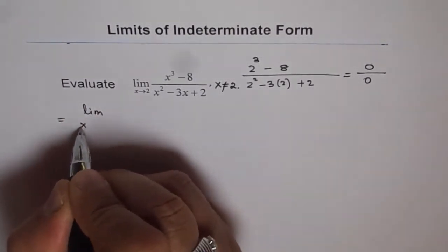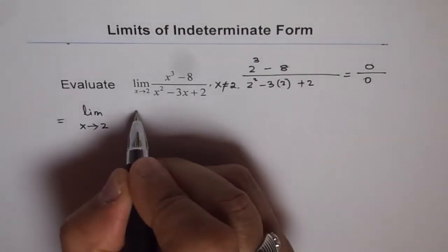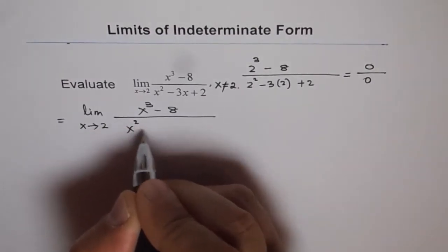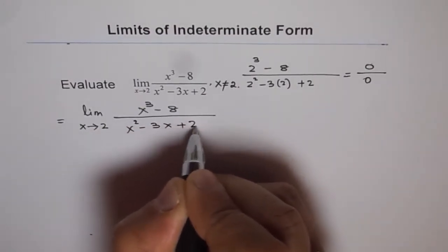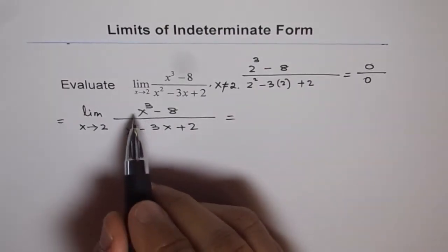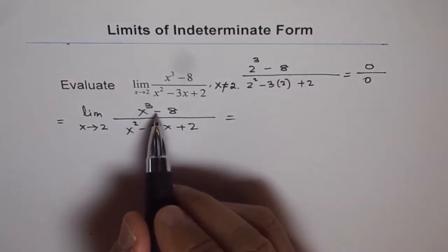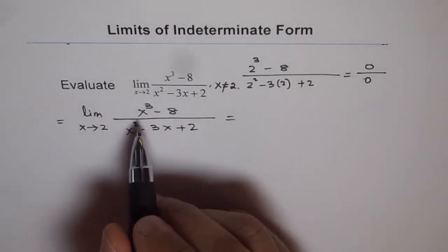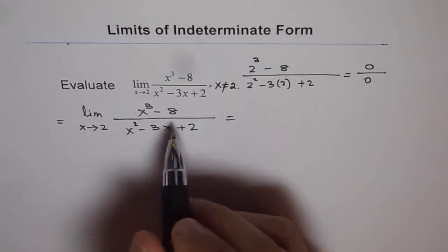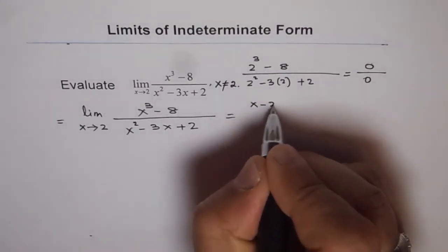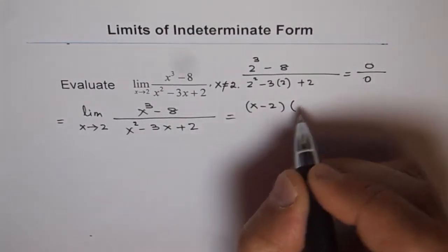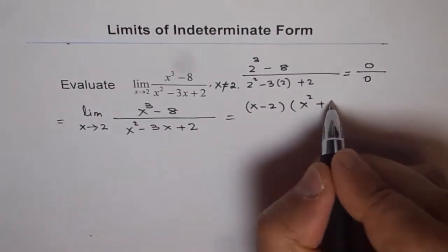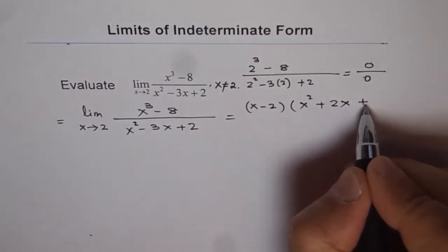We get limit as x approaches 2, and the function is x cubed minus 8 over x squared minus 3x plus 2. Now the numerator is x cubed minus 2 cubed, since 8 is 2 cubed. So we can factor it using the difference of cubes formula. We get x minus 2 times x squared plus 2x plus 4.